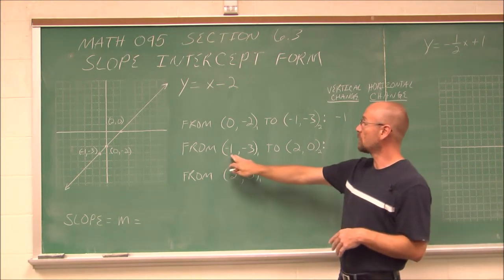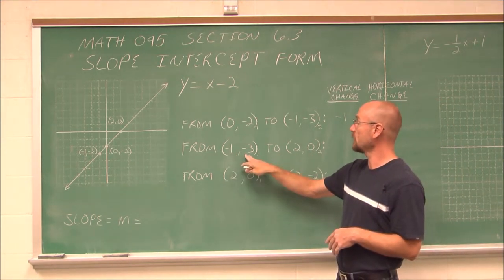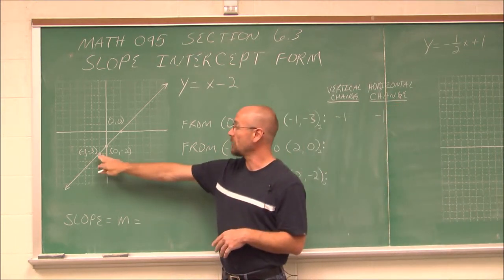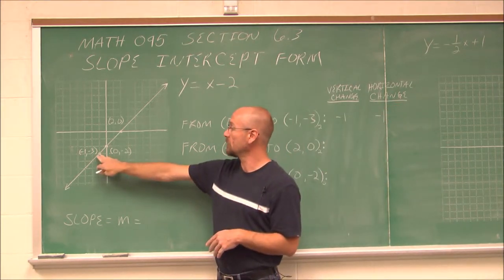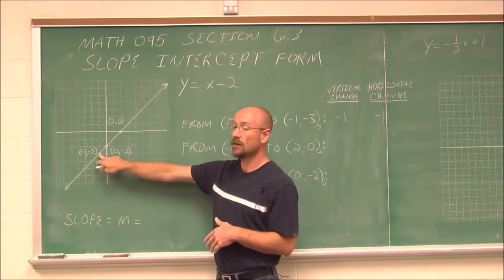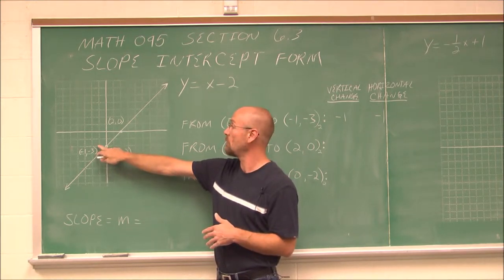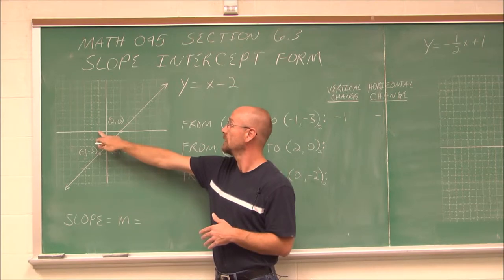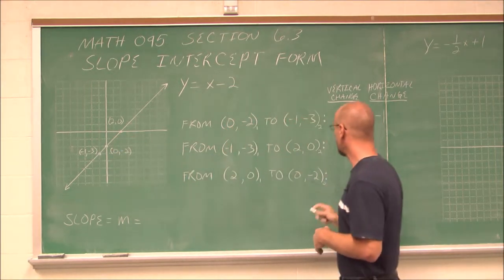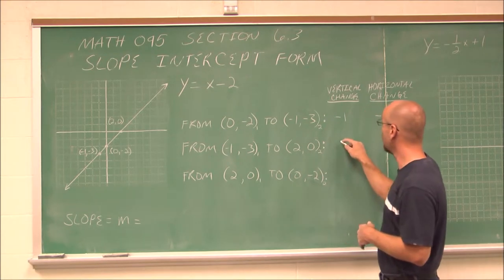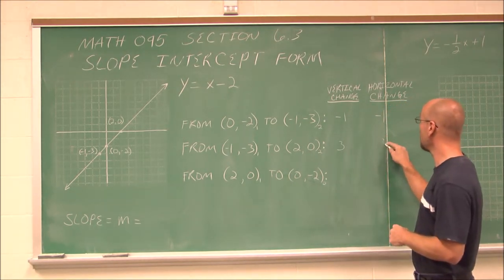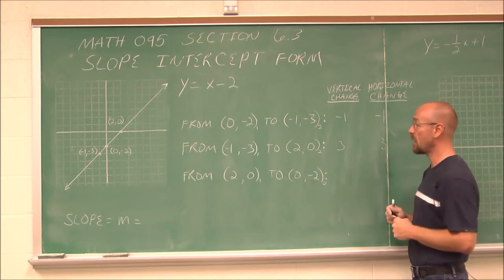What if I wanted to go from the point (-1, -3) to the point (2, 0)? Looking at the graph, (-1, -3) is here and I want to go to (2, 0). The vertical change is going up 1, 2, 3, and then to the right 1, 2, 3. So we go up 3 — that's positive — and to the right 3, which is also positive.